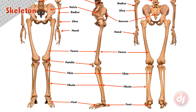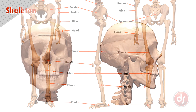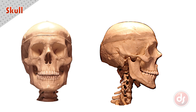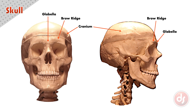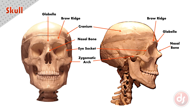Now let's look at all these parts more closely. The skull is made up of many parts. The cranium is the round cavity that protects our brain. The brow ridge is the protrusion above our eyes. The flatter middle section between the brow ridge is the glabella. Below the glabella is the top of our nasal bone. The parts of the nose beyond this are all cartilage. As the brow ridge moves to the side of the head, it becomes the eye socket, and the eye socket curves back creating the zygomatic arch.